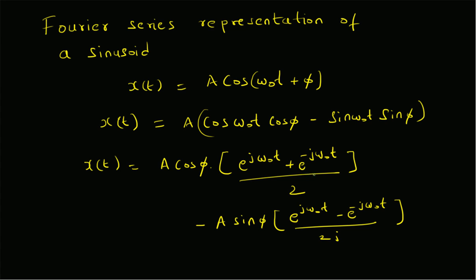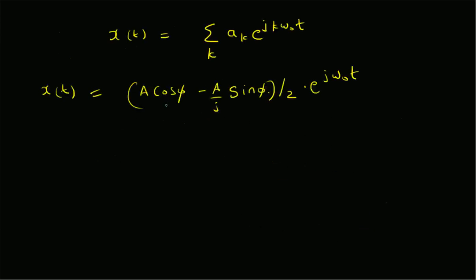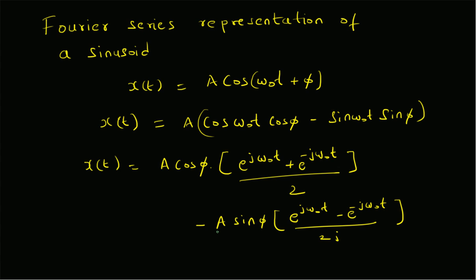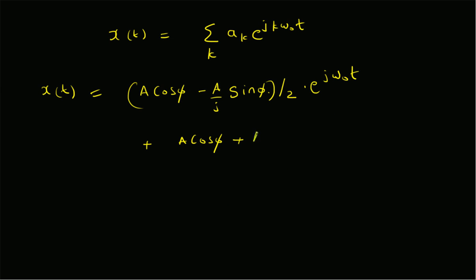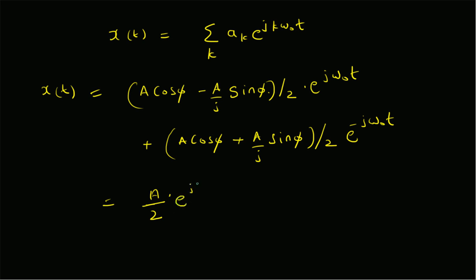Then we gather the terms corresponding to e^(-jω₀t), which gives [A·cos(φ) + A·sin(φ)/j] divided by 2, multiplied by e^(-jω₀t). We can simplify further because -1 = j², giving us A·cos(φ) + j·A·sin(φ), all divided by 2.